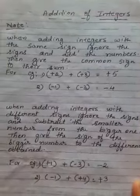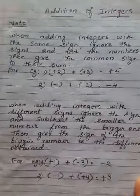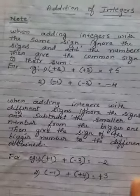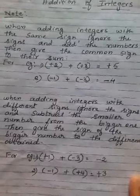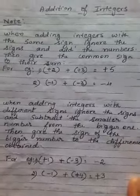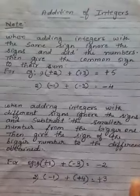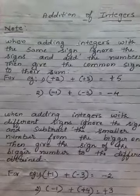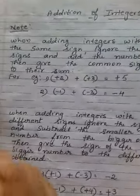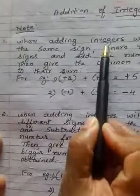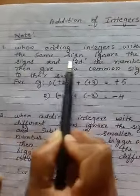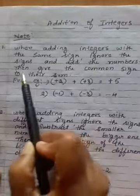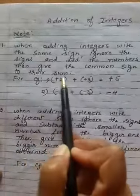Hello students. In the previous class we learned about integers and addition of integers. Let's revise it. While adding integers, we must follow some rules of addition. The first rule is: when adding integers with the same sign, ignore the sign and add the numbers, then give the common sign to their sum.